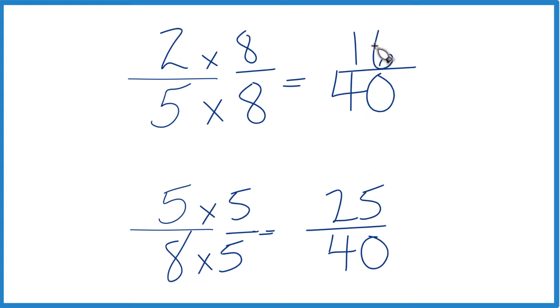Since 25 is greater than 16, 25 fortieths, that's greater than 16 fortieths. And you could subtract 25 minus 16, that would give you 9. So it's 9 fortieths greater. And since this and this, these fractions are equivalent, we can say 5 eighths is greater than 2 fifths. And it's greater than 2 fifths by 9 fortieths, just like we found before.